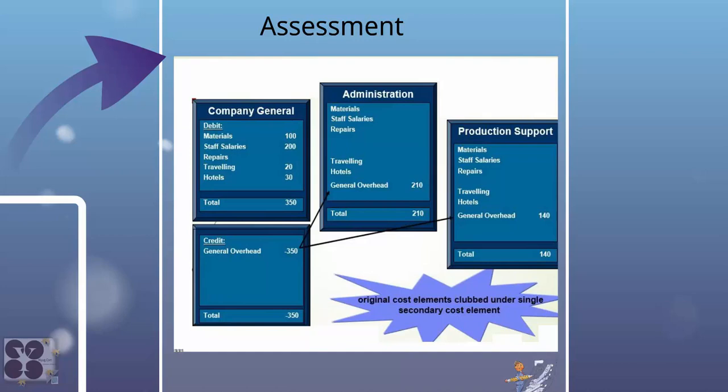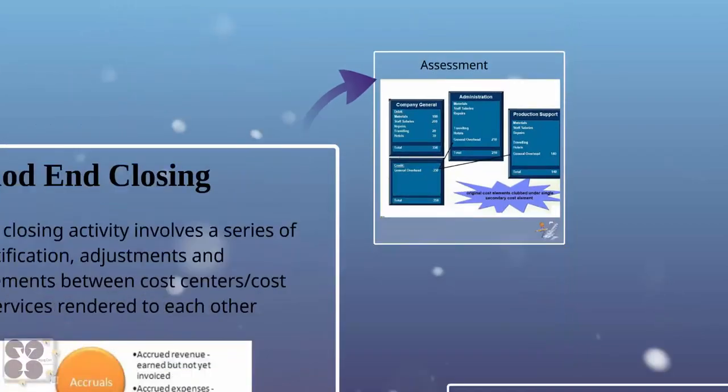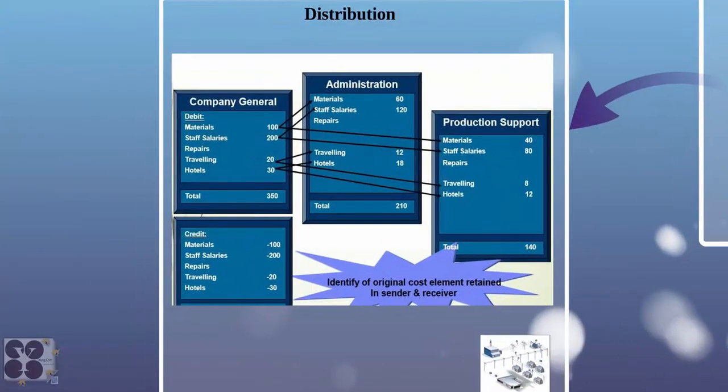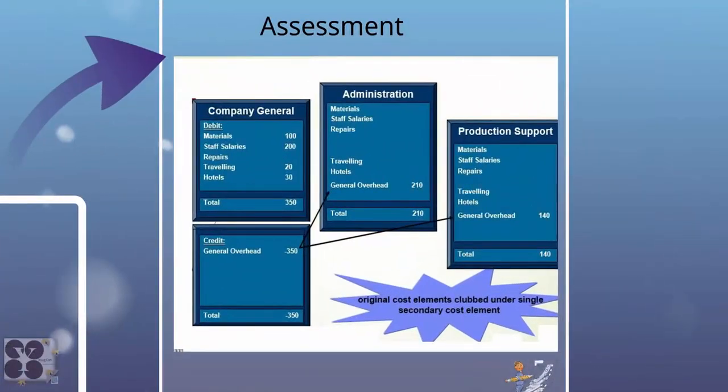In assessment, the original cost elements are clubbed under a single secondary cost element. Looking at distribution again: the identity of the original cost is retained in both sender and receiver. In this case, receivers are administration and production support; the sender is company general. Each time we are distributing, we are referring back to the sender, which means each time we are increasing a line item. That's the difference between assessment and distribution.